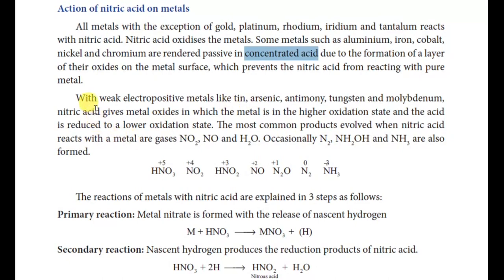Next, the weak electropositive metals like tin, arsenic, antimony, tungsten, and molybdenum. When nitric acid reacts with these metals, it produces metal oxides in which the metal is in the higher oxidation state — such as plus 2, plus 3, or plus 7 — compared to the zero oxidation state of the pure metal.